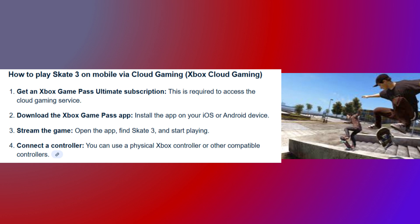Get an Xbox Game Pass Ultimate subscription — this is required to access the cloud gaming service. Download the Xbox Game Pass app and install it on your iOS or Android device. Then stream the game: open the app, find Skate 3, and start playing. You can also connect a controller — a physical Xbox controller or other compatible controllers.